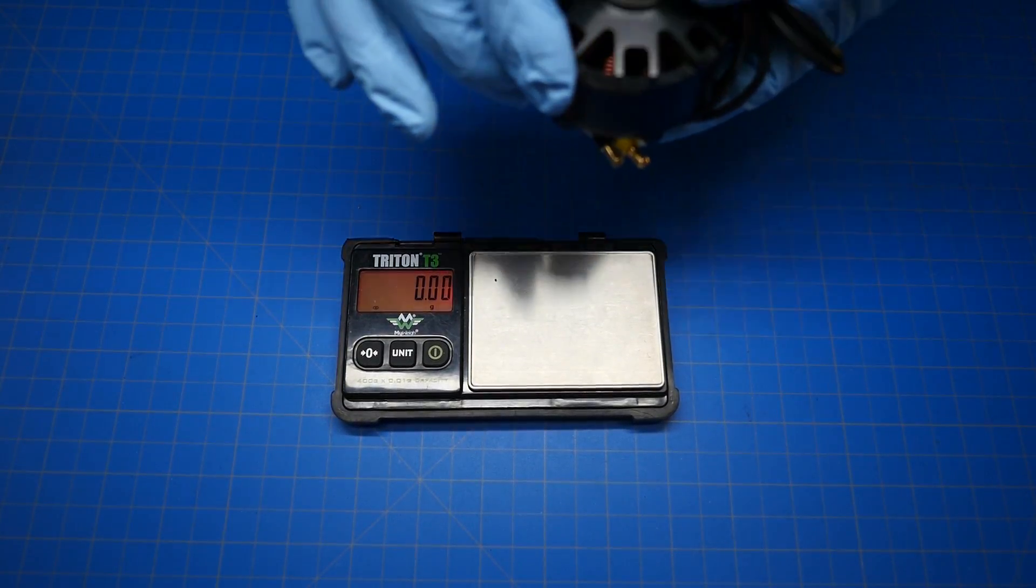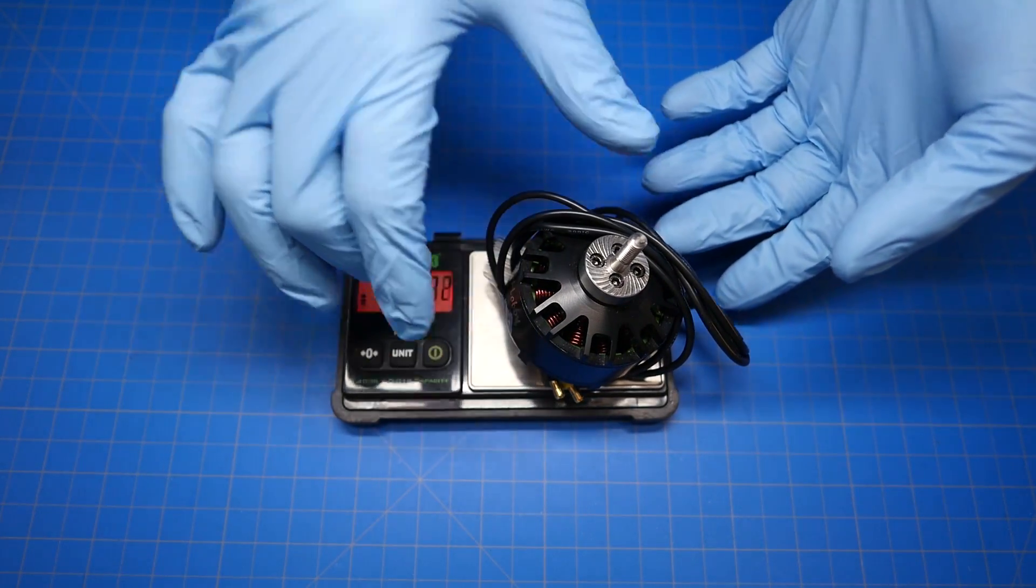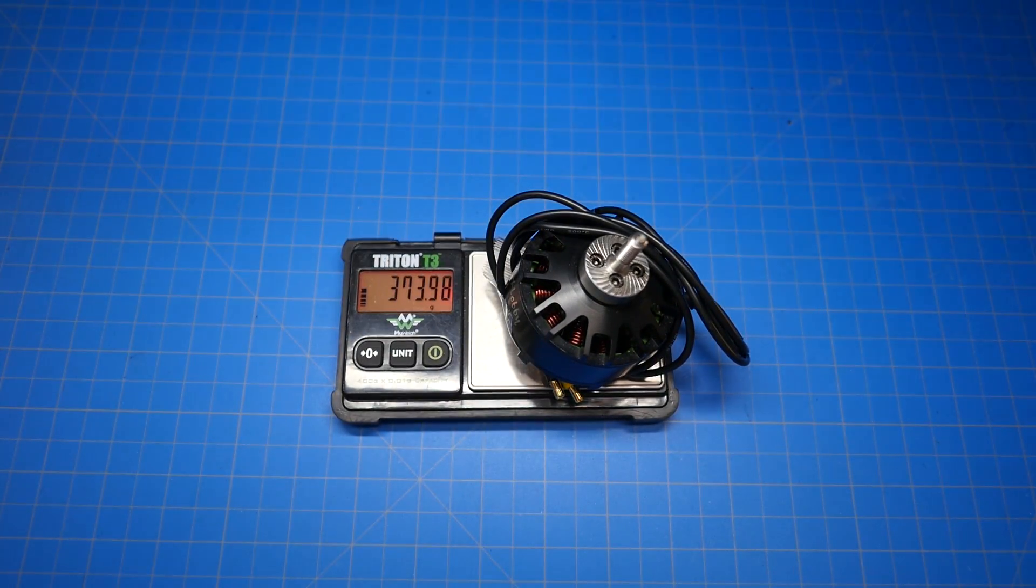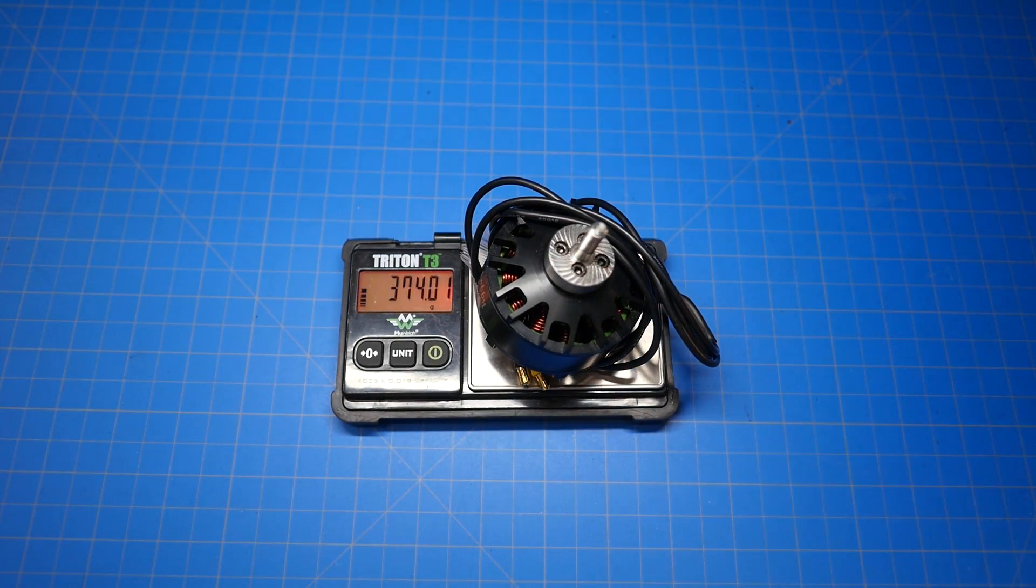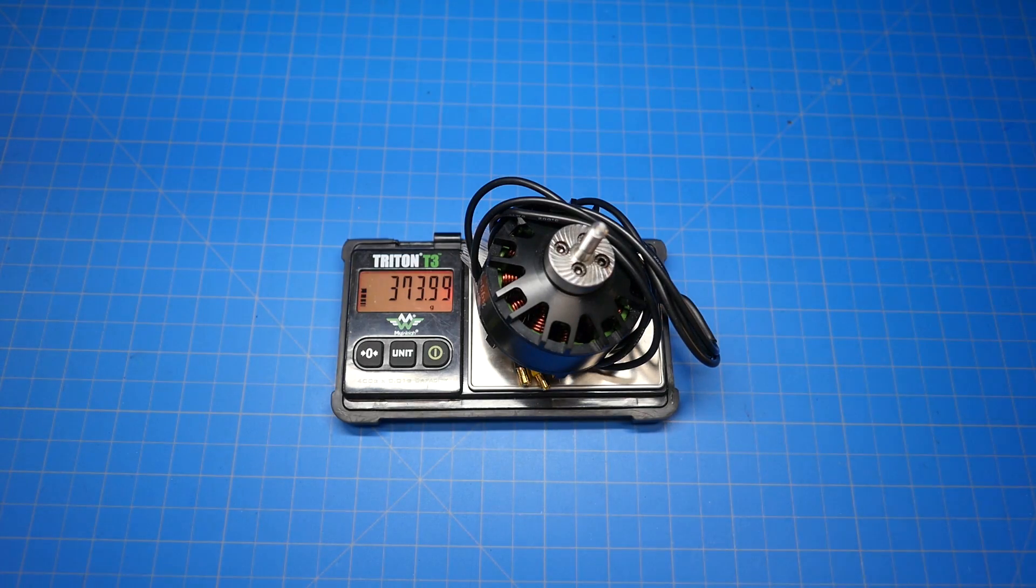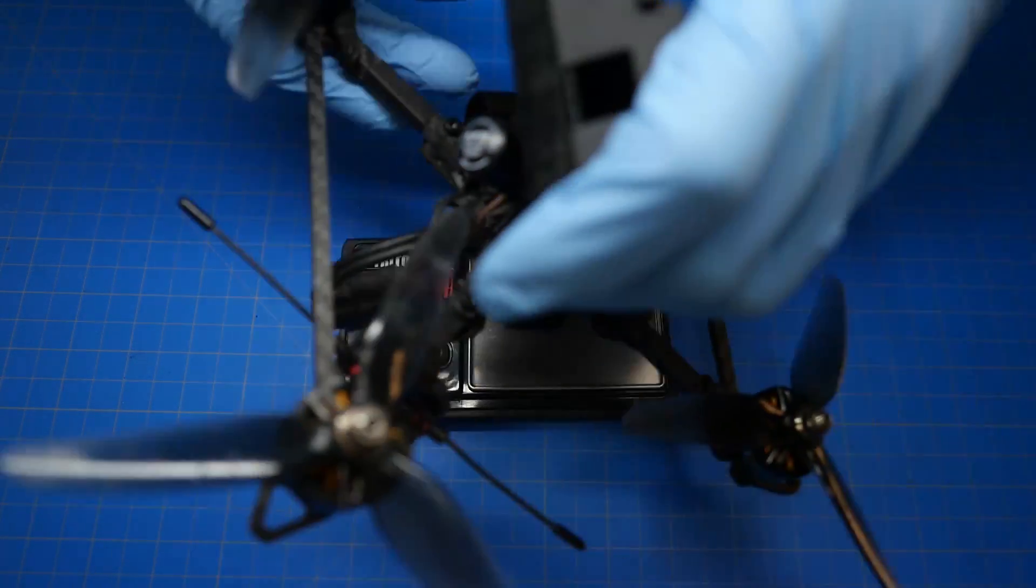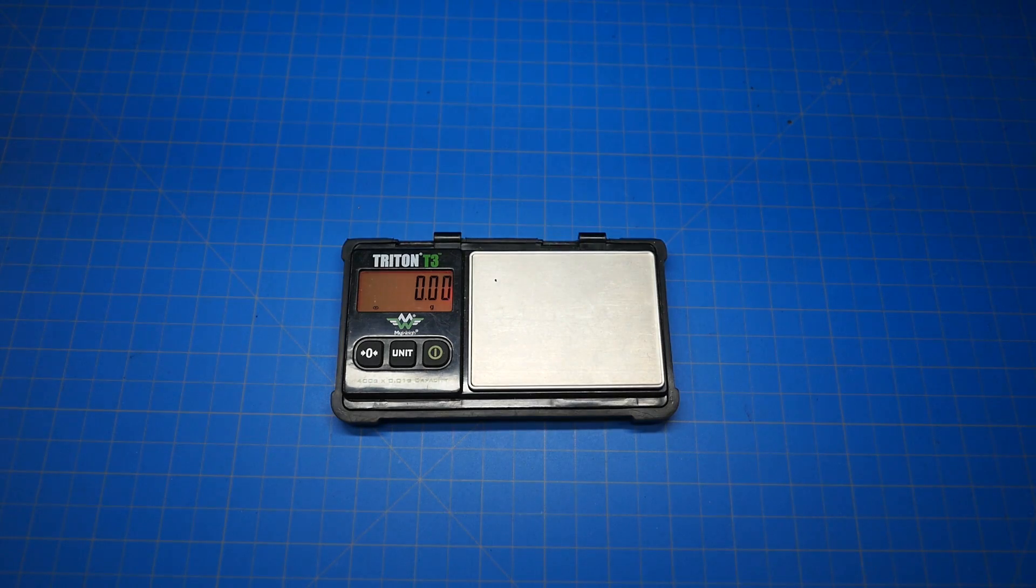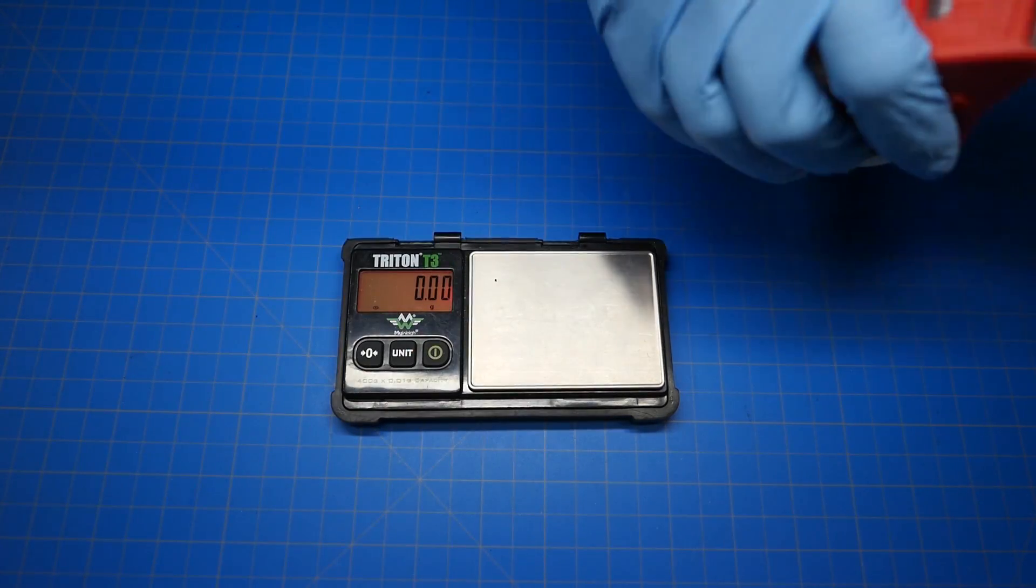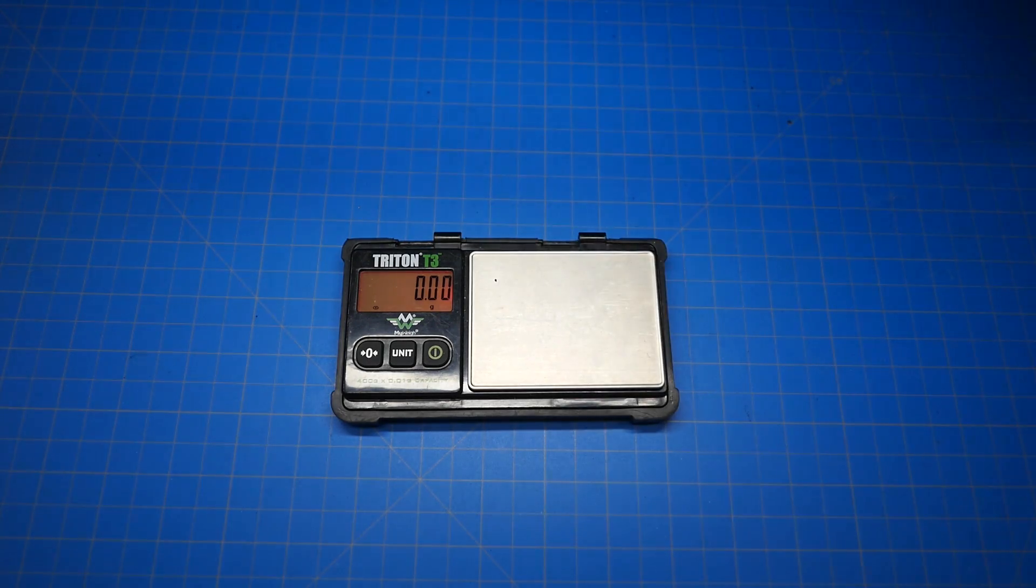So the first we're going to weigh is the Brother Hobby motor. We've got a very accurate scale here. We've got 374 grams. You absolute behemoth of a motor. That weighs more than this entire quad. Very powerful motor though. Do not discount the Brother Hobby 5215, my friends.